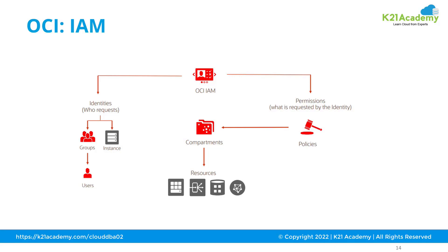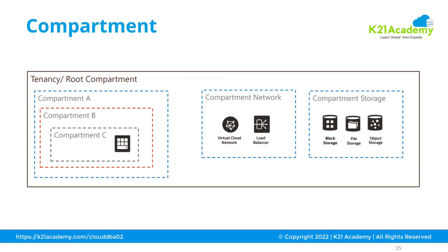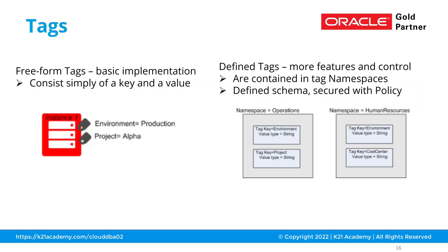So that's your users, groups, compartments, and policies that make up your Identity and Access Management. The compartment is a logical collection of resources on which you apply policies, giving access to users, and there can be nested compartments as well. Another topic you should know is tags — any resource you create in OCI you can tag, and these tags can later be used for cost tracking and other purposes.